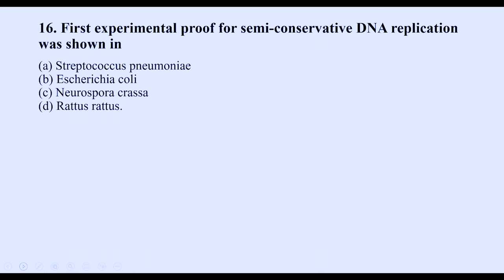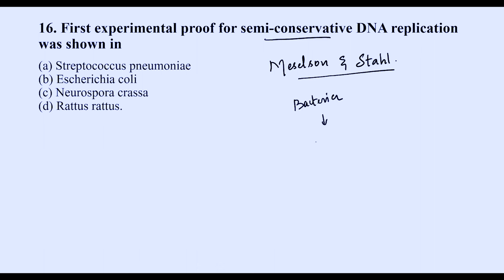The first experimental proof for semi-conservative DNA replication was shown in E. coli by the scientists Meselson and Stahl. They used isotopes of nitrogen to demonstrate that each new DNA molecule retains one original strand. The correct option is B.